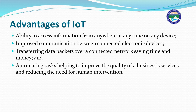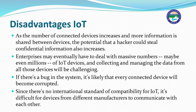Disadvantages of IoT: as the number of connected devices increases and more information is shared between devices, the potential for a hacker to steal confidential information also increases. Enterprises may eventually have to deal with massive numbers of devices — even millions — which is also a disadvantage. If there is a bug in the system, every connected device in the network is likely to be corrupted. Additionally, since there is no international standard for IoT compatibility, it is difficult for devices from different manufacturers to communicate with each other.